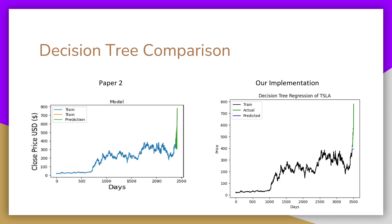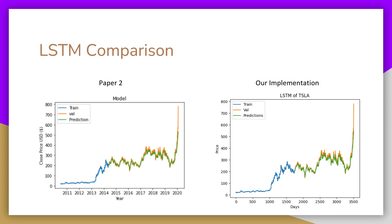For the decision tree, we noticed that they are able to predict the stock price spike in 2020, which leads us to believe they used all of the data as training data. So instead, we let the last 50 points be used for prediction.